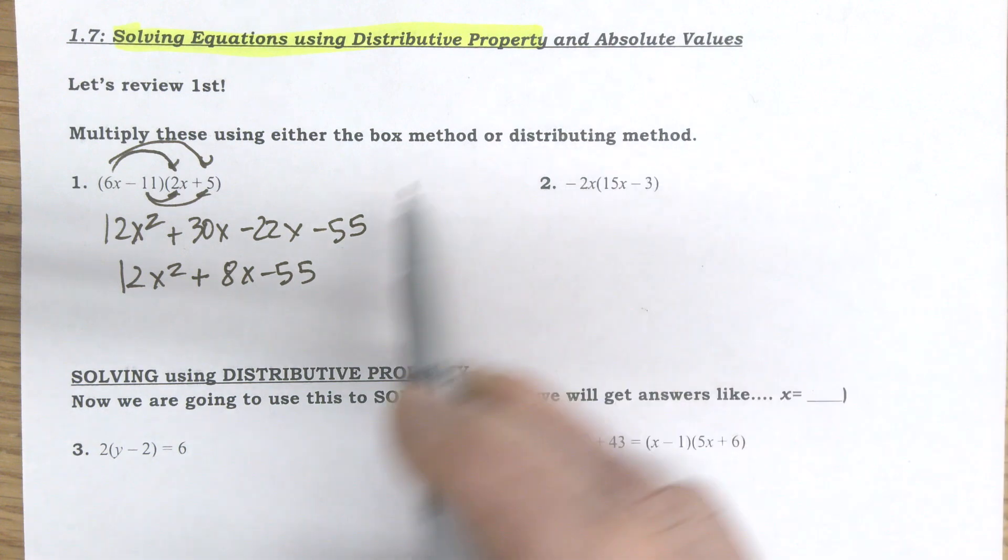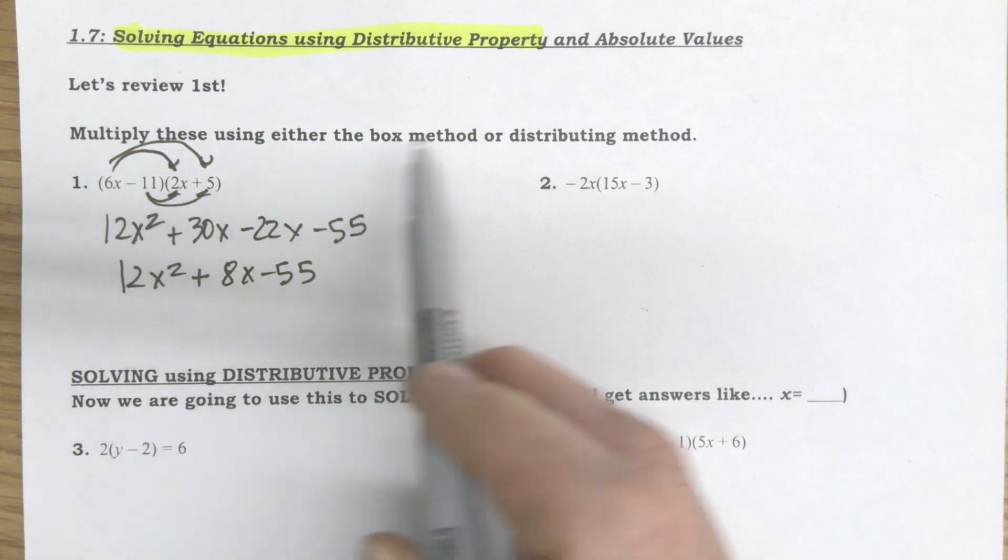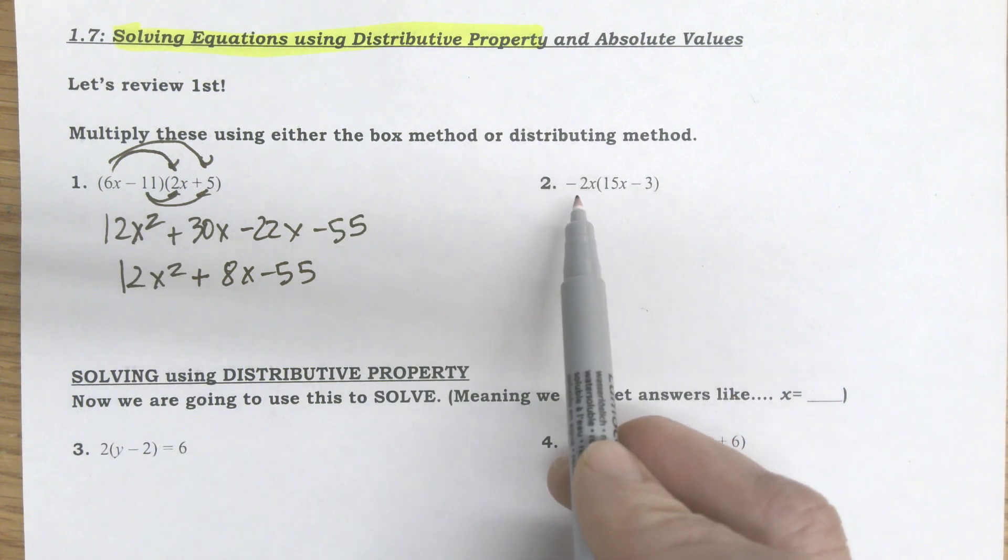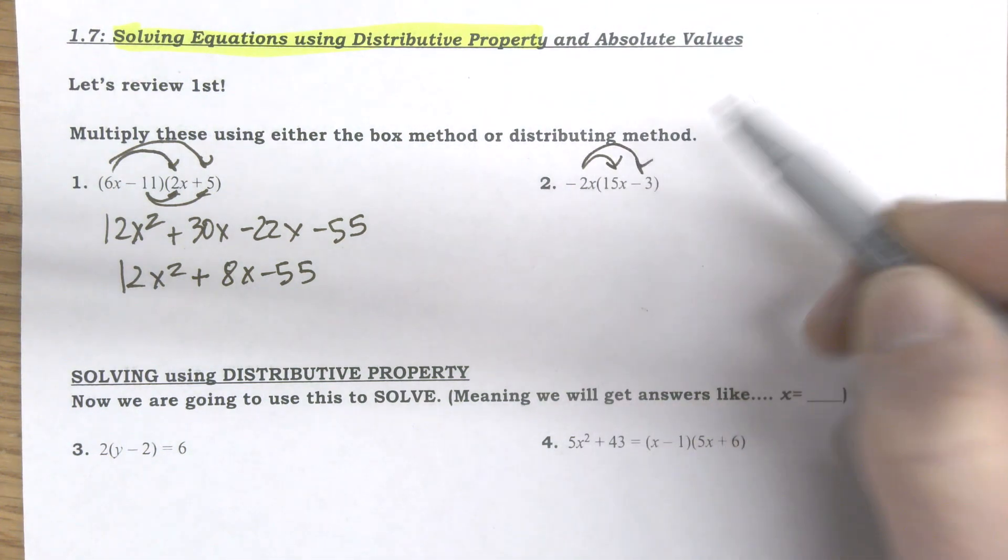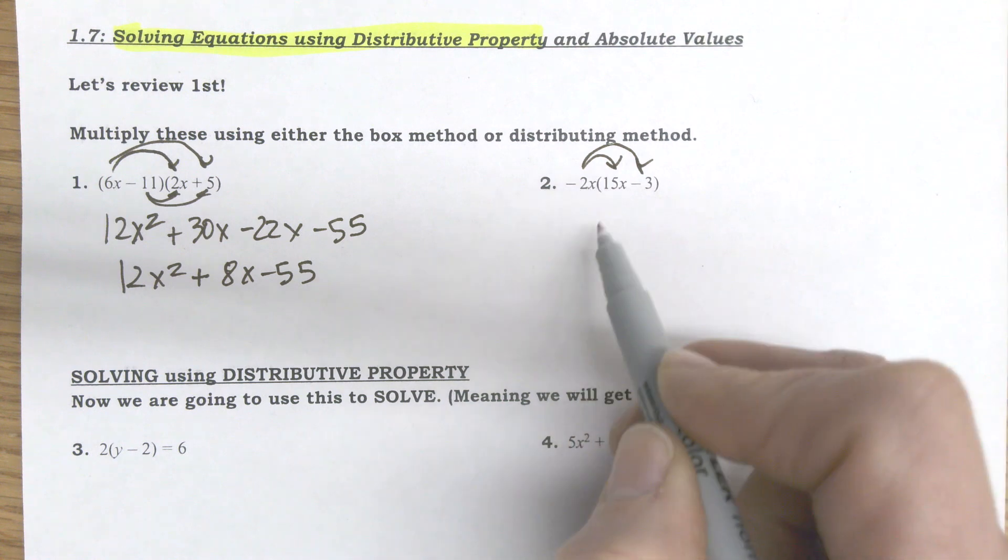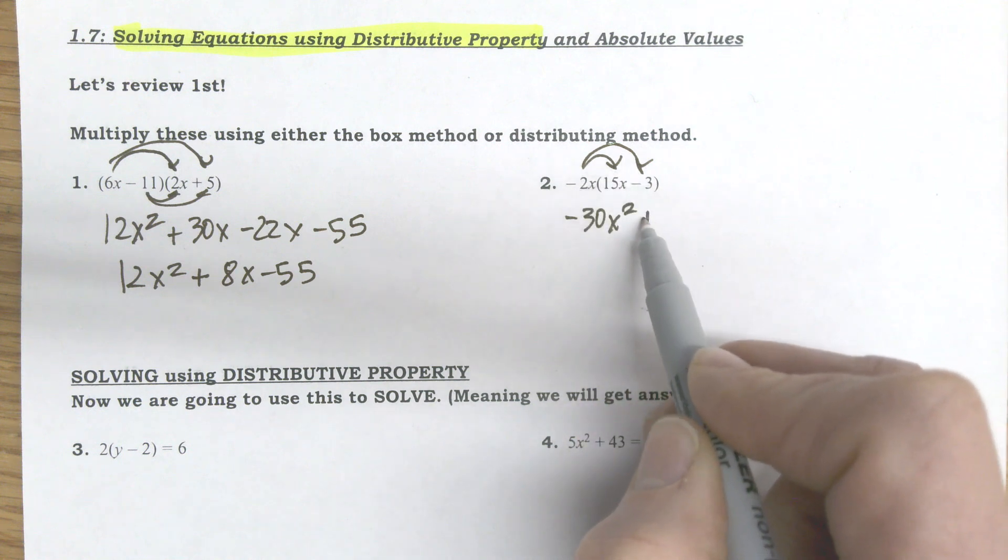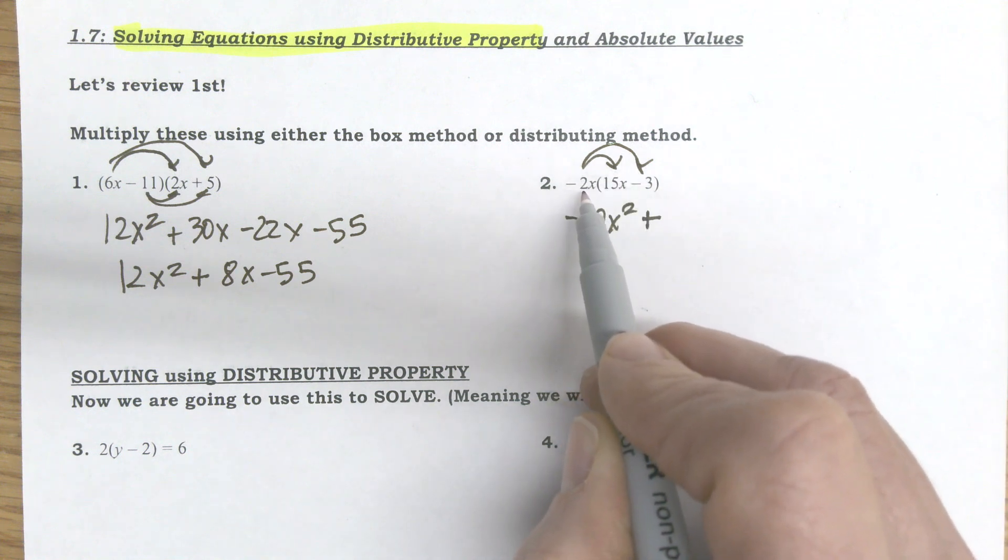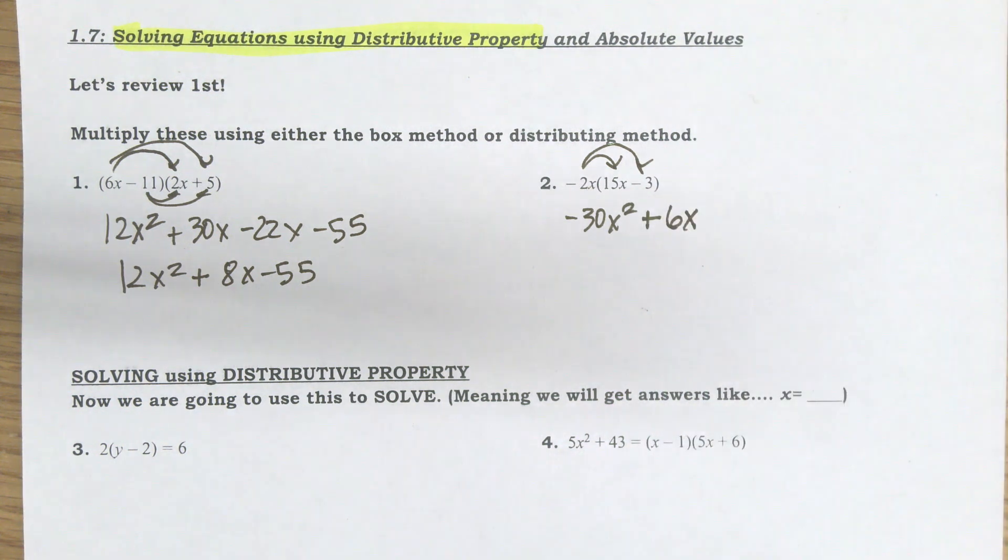It's even easier, in this case I had a binomial times a binomial, so 2 terms times 2 terms. It's even easier when I have a monomial, a single term times a binomial, because then I don't have to double distribute. I only need to distribute once. Watch out for signs though. So this is negative 30x squared. Also watch out for your power rules. And then a negative times a negative is a positive. It would be negative 2x times negative 3x is positive 6x. And I'm done with my distributing on that problem.